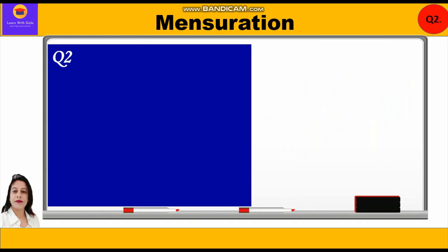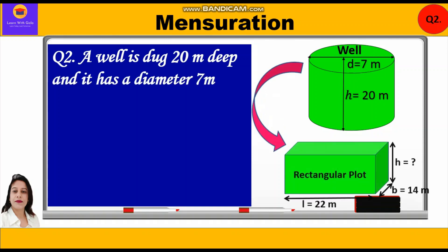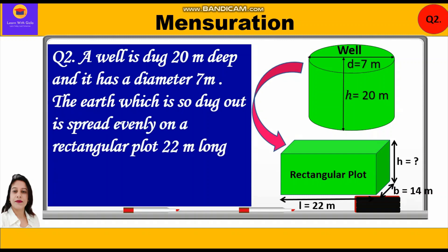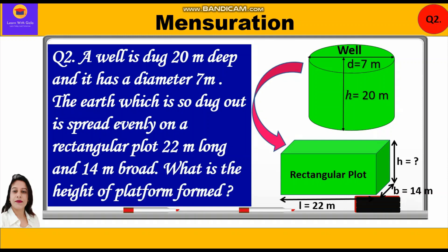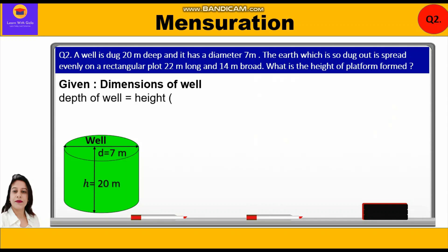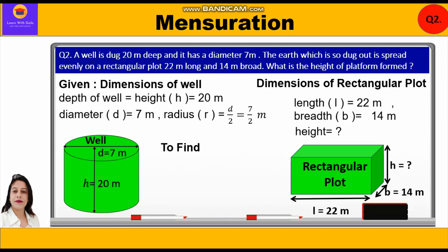Question number two: A well is dug 20 meters deep and has a diameter of 7 meters. The earth which is dug out is spread evenly on a rectangular plot 22 meters long and 14 meters broad. What is the height of the platform formed? Given: depth of well (height) = 20 m, diameter = 7 m, radius = 7/2 m. Rectangular plot: length = 22 m, breadth = 14 m. Find the height of the platform.